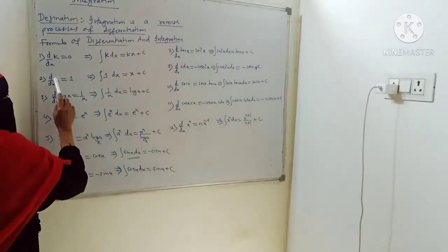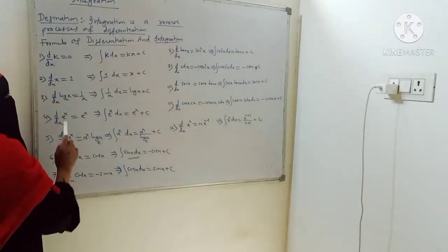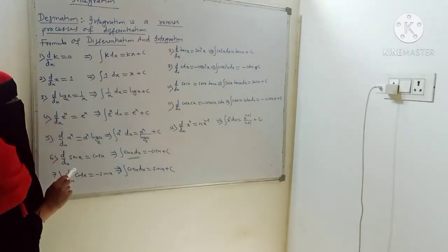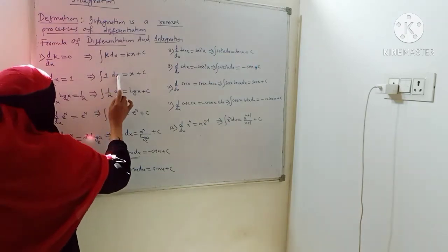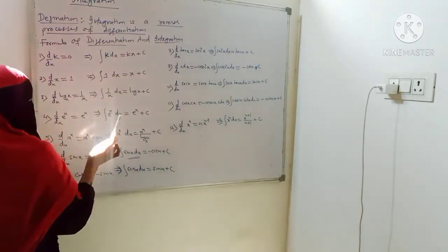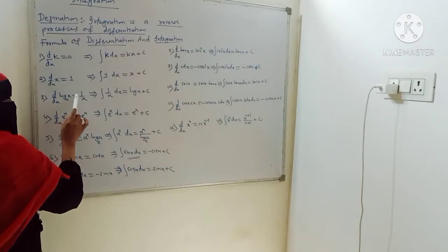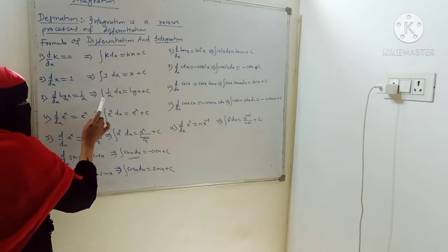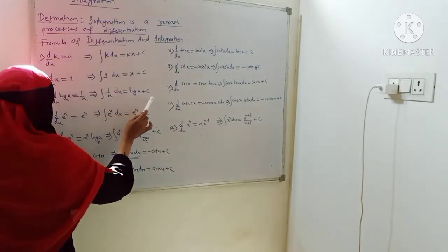d/dx of x is 1, always. Integration of 1 dx is x plus C. d/dx of x gives 1 over x. Integration of 1/x is ln x plus C.